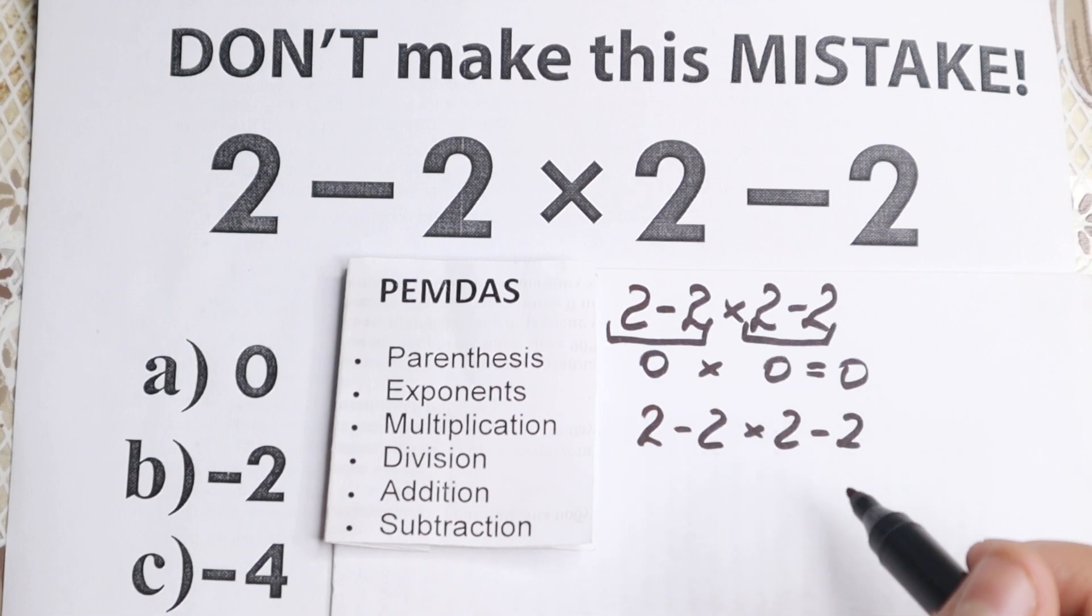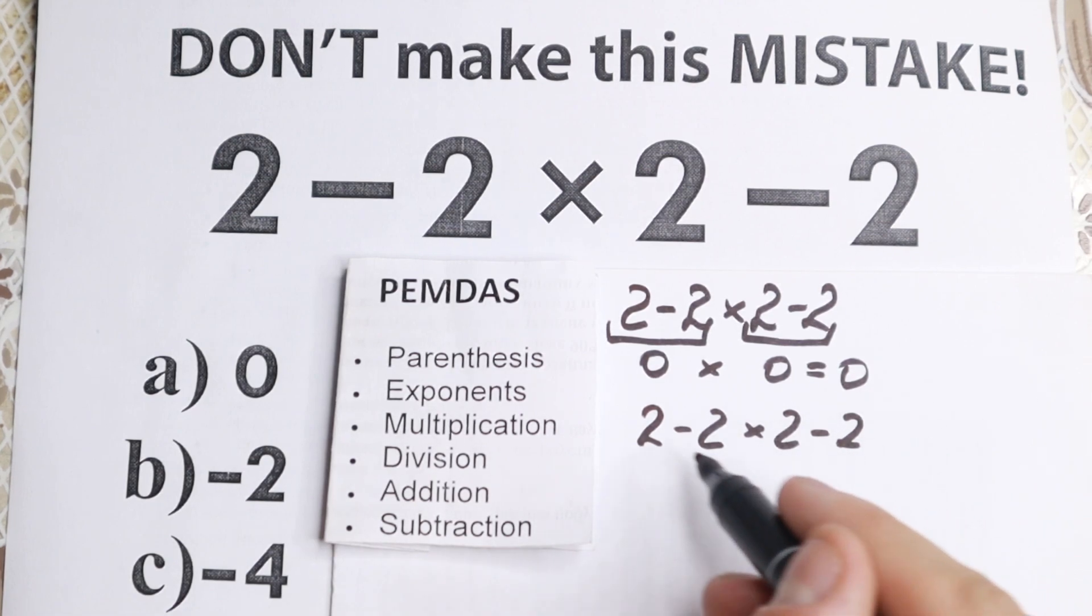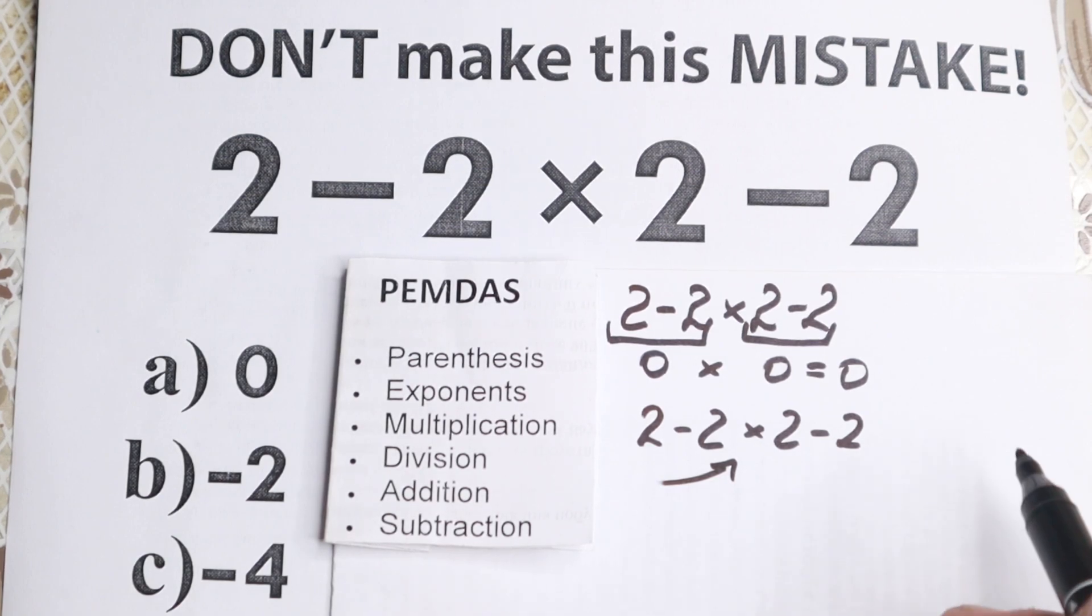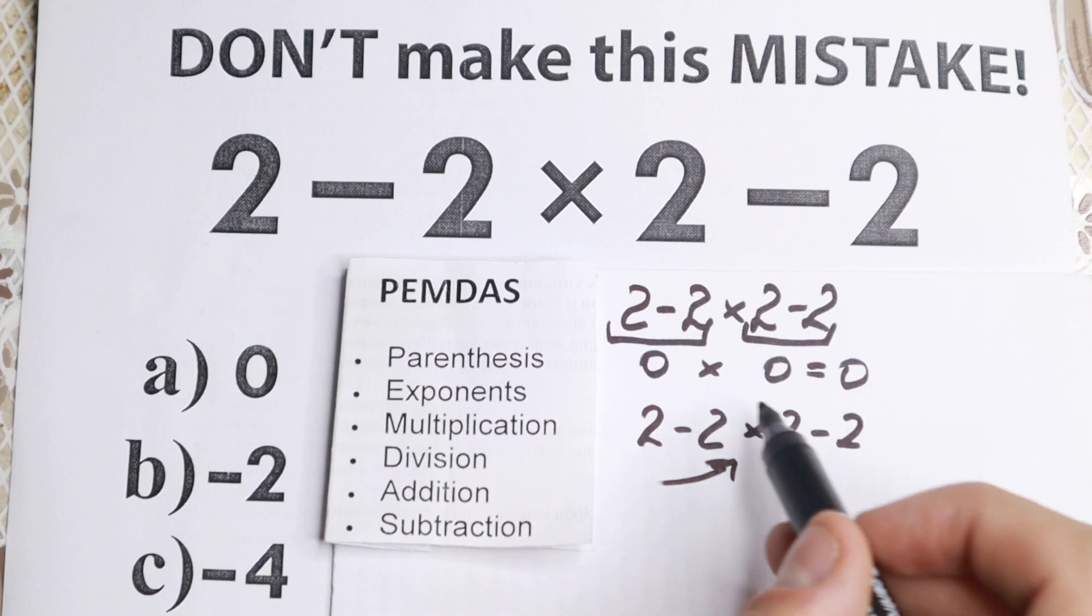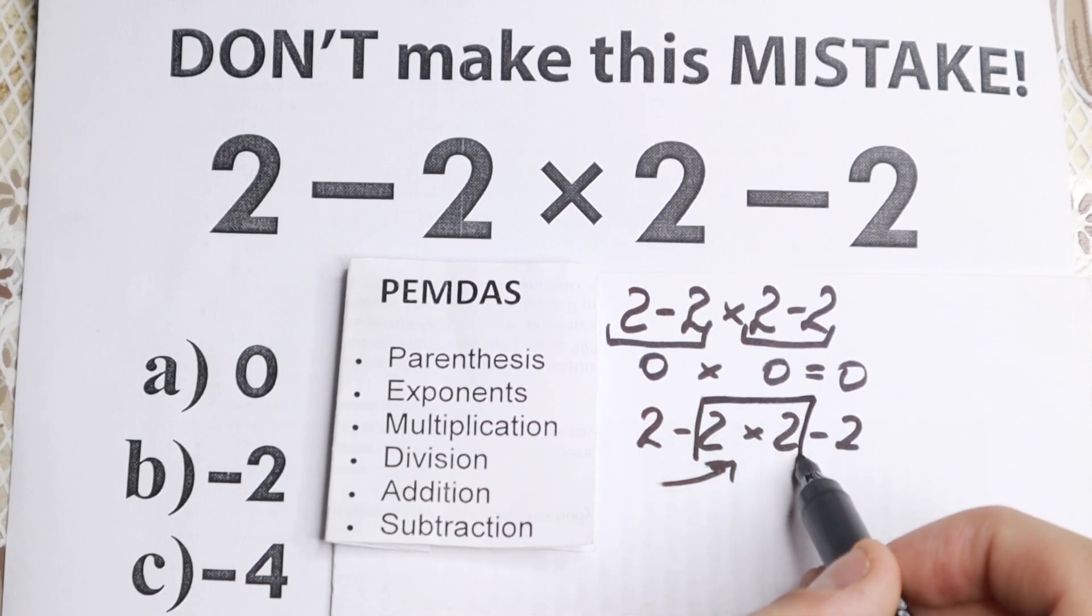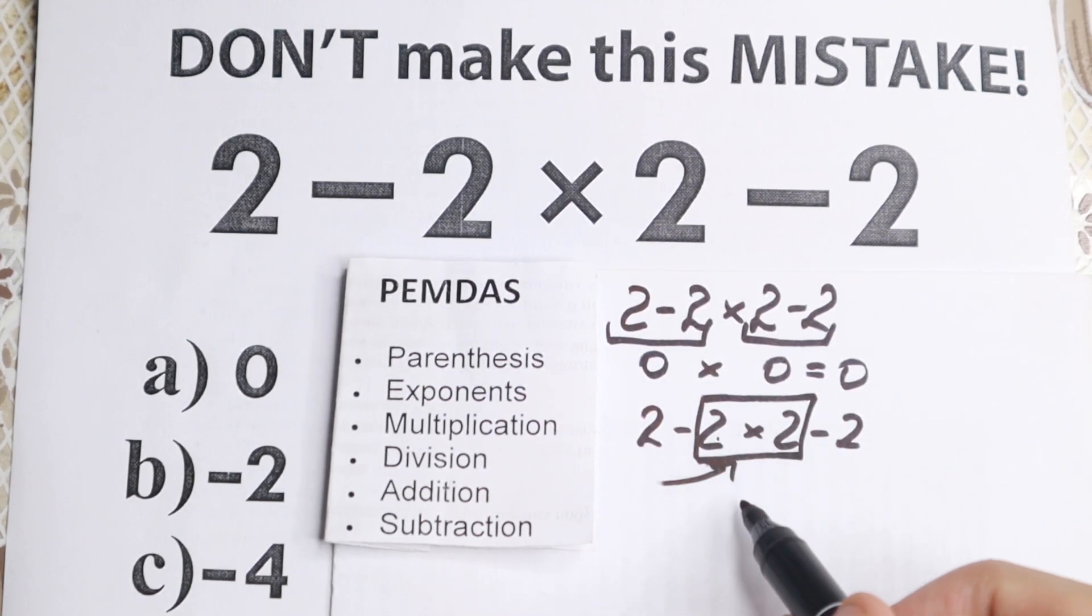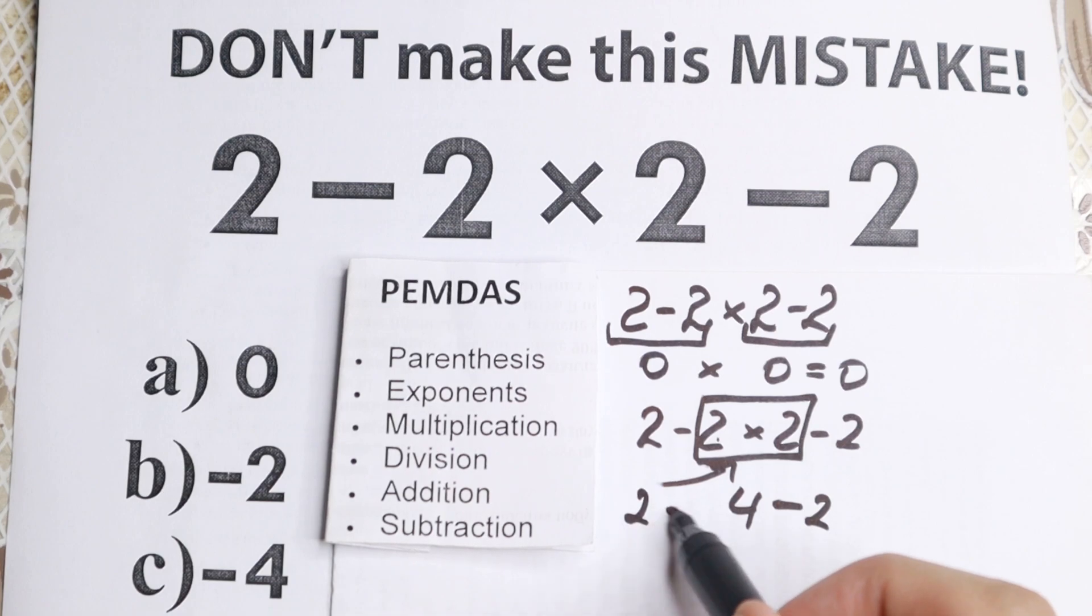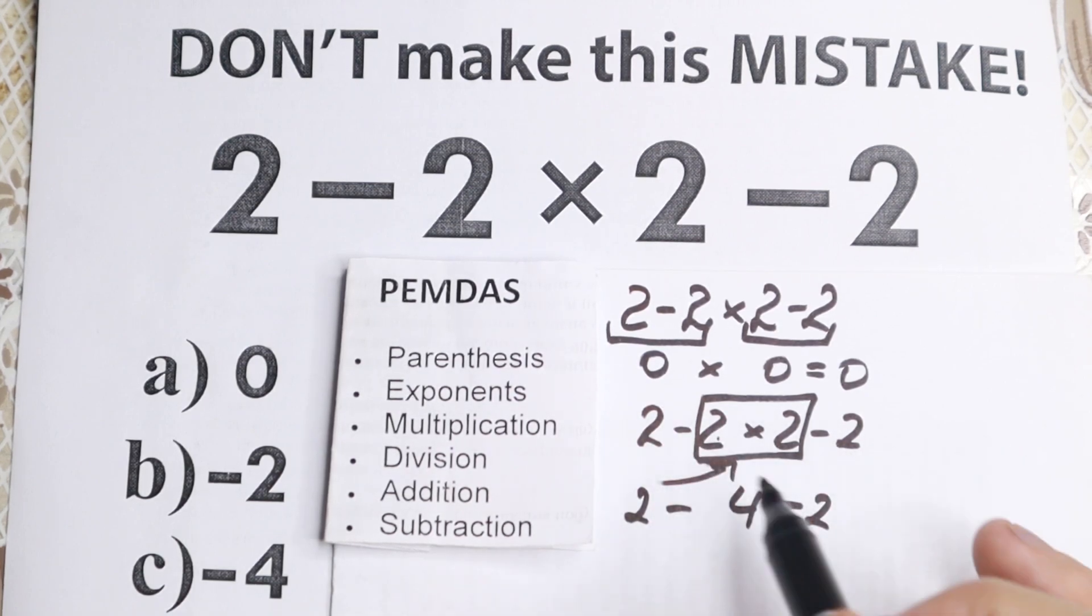Then we have multiplication and division part, and if you look closely to this we don't have division sign, but we have multiplication sign right here in the middle. So we need to start with this multiplication at first, and this is the main thing right here, because if we start with this multiplication we will have 2 times 2, we all know this, equal to 4. In the end we have minus 2, and in the beginning we have 2 minus. So we still have these values, these numbers in the beginning.